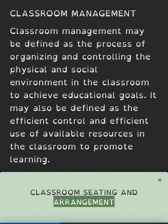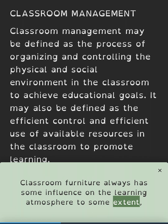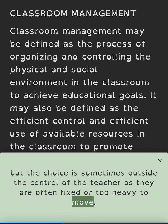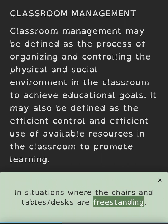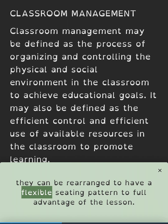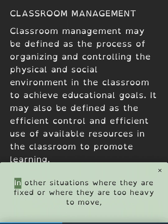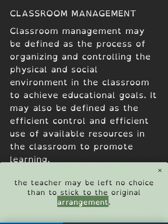Classroom seating and arrangement: classroom furniture always has some influence on the learning atmosphere, but the choice is sometimes outside the control of the teacher as they are often fixed or too heavy to move. In situations where the chairs and tables are freestanding, they can be rearranged to have a flexible seating pattern to take full advantage of the lesson. Where they are fixed or too heavy to move, the teacher may be left with no choice but to stick to the original arrangement.